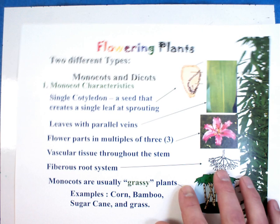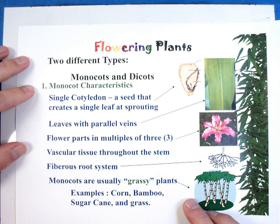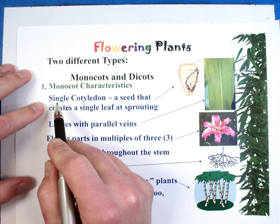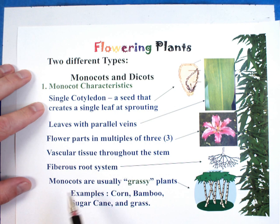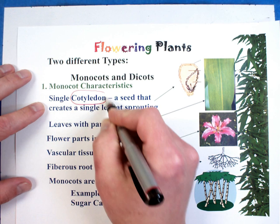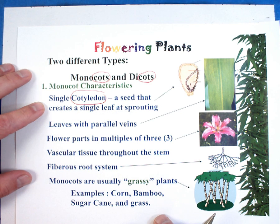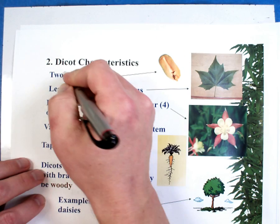All right, let's look at both of them together. Monocots and dicots are two types of flowering plants. The very first thing you see is that a monocot has a single cotyledon — a seed that creates a single leaf at sprouting. Cotyledon is actually where this part of the word comes from. Monocots and dicots should be monocotyledon and dicotyledon, but they shorten the word to monocot and dicot. A single cotyledon versus two cotyledons in the other.